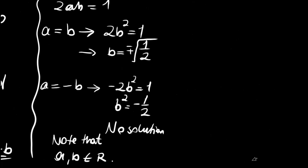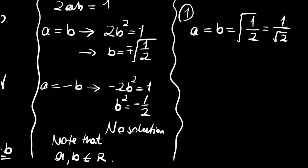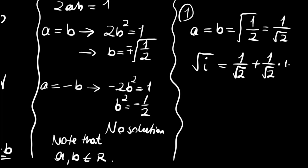So we have found that the first solution is a and b both equal to positive one over square root of two. Therefore, the square root of i equals one over square root of two plus one over square root of two times i. This is the first result.